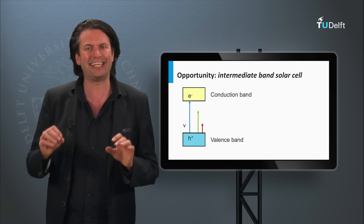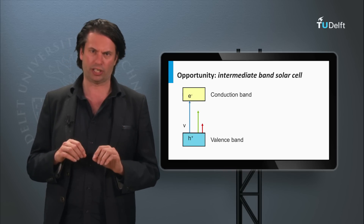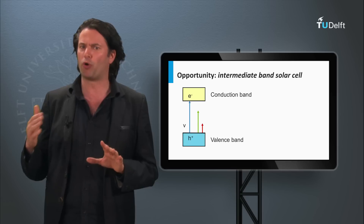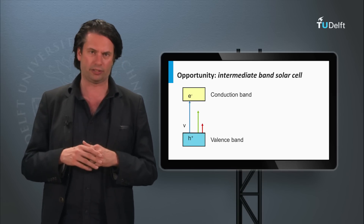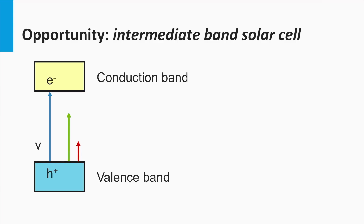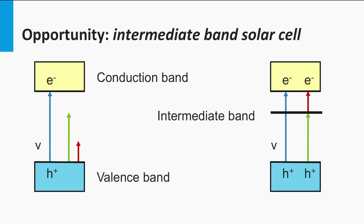Next, we look at the intermediate band solar cell, a concept that tries to tackle the problem that each charge carrier only has a single population state. Here we see a semiconductor material with a valence band and conduction band. An intermediate band material contains a narrow electronic band in the band gap as well, and such a structure is believed to increase the spectral utilization. The high-energetic photons can excite an electron from the valence band into the conduction band, just like in a normal semiconductor material.